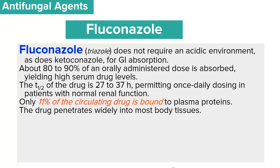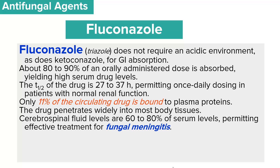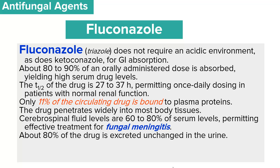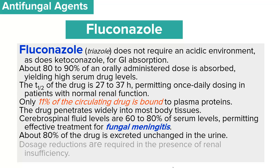Fluconazole penetrates widely into most body tissues. In the cerebrospinal fluid, we have about 60 to 70 percent of serum levels, which permits effective treatment of fungal meningitis. Eighty percent of fluconazole is excreted unchanged in urine, and dose reduction may be required in the presence of renal failure or renal insufficiency.